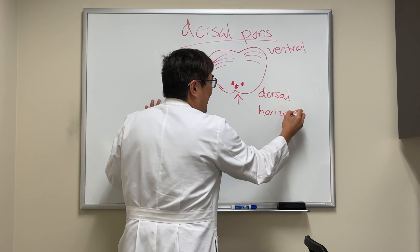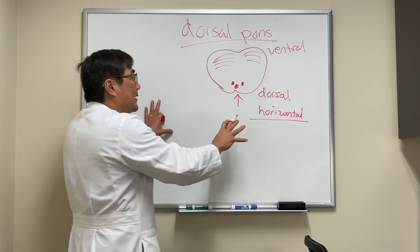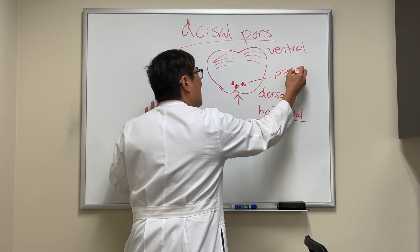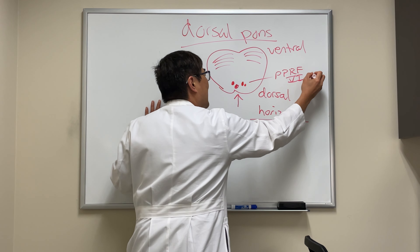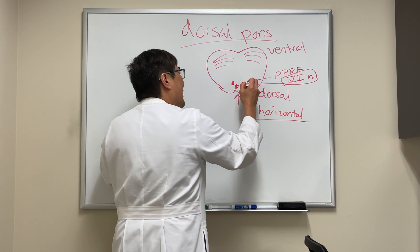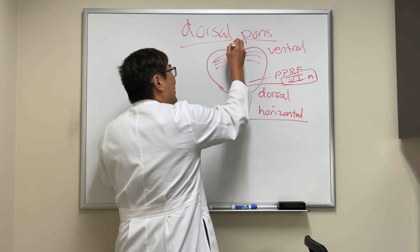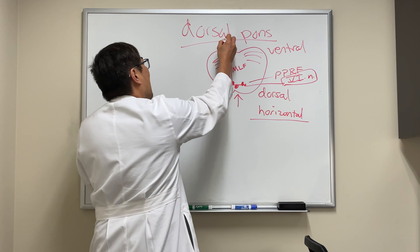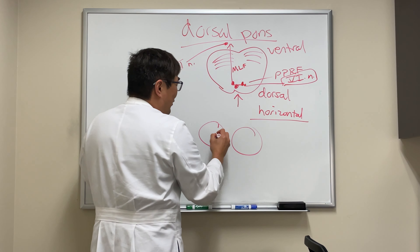In the pons, this is the horizontal gaze center. As opposed to the midbrain where the vertical gaze center lives, this is for horizontal gaze. It's a combination of the parapontine reticular formation and the sixth nerve nucleus and its fascicle. The sixth nerve nucleus is the final common pathway for horizontal gaze. It talks to the contralateral medial longitudinal fasciculus, which goes upstairs to the midbrain to talk to the third nerve.